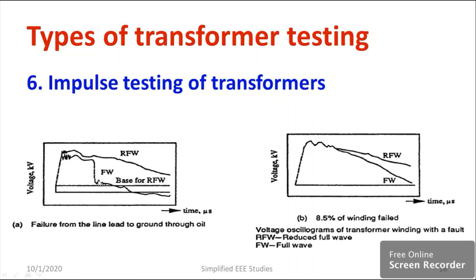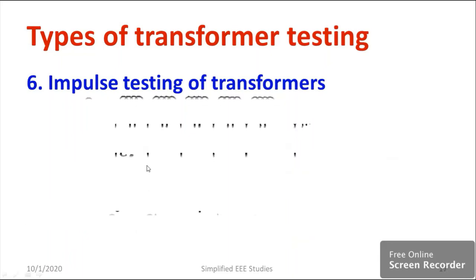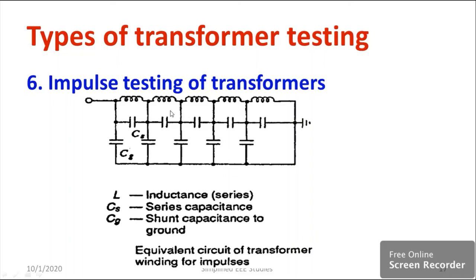You can apply either reduced full wave or full wave — if you find any sudden droop, you know there is a problem in the transformer insulation — there is a short circuit. This winding diagram is helpful for conducting the testing. It is the equivalent circuit of the transformer winding, required for conducting impulse testing. Where L stands for series inductance, Cs stands for series capacitance, and Cg stands for shunt capacitance to the ground.